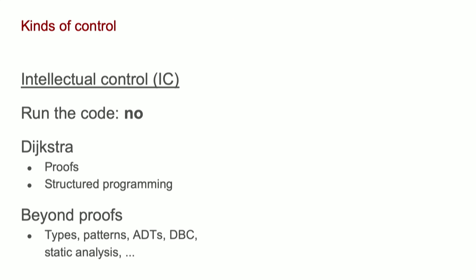I need to introduce the vocabulary of intellectual control here. The idea, as Dijkstra was talking about it, is: before you run the code, do you have good confidence that it's going to do what you expect? Dijkstra was a mathematician by training, and so he held the standard that we should be proving our code to be correct. Very few of us do that today.